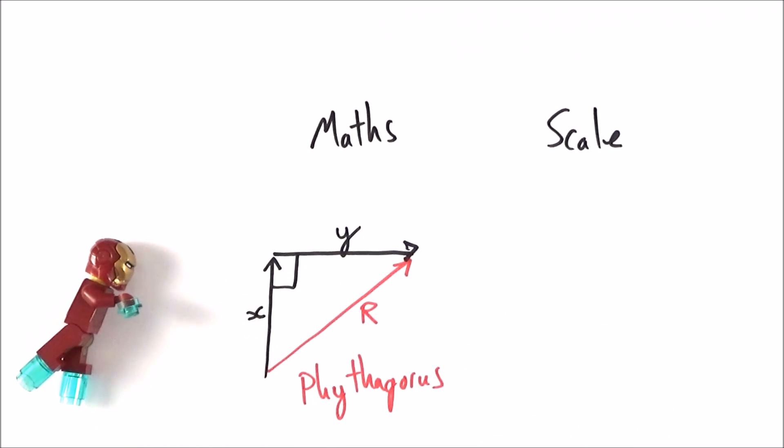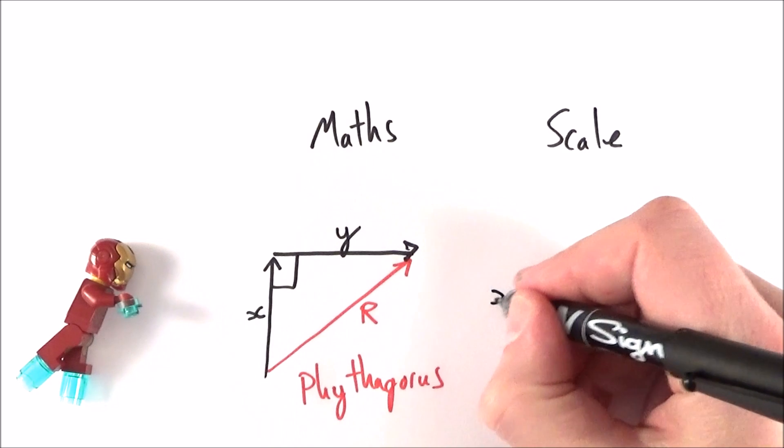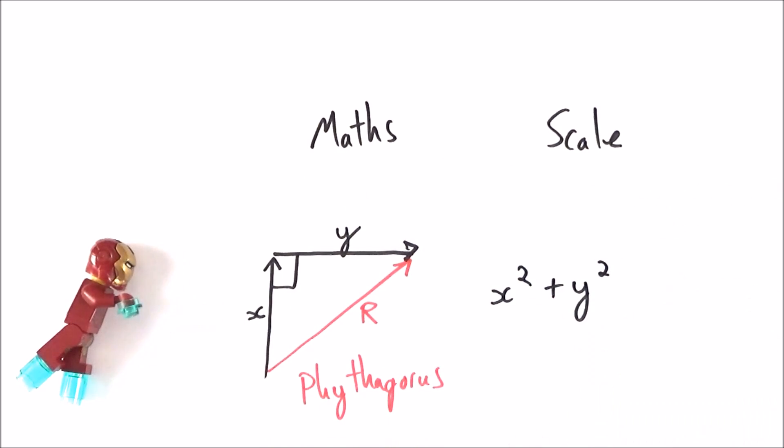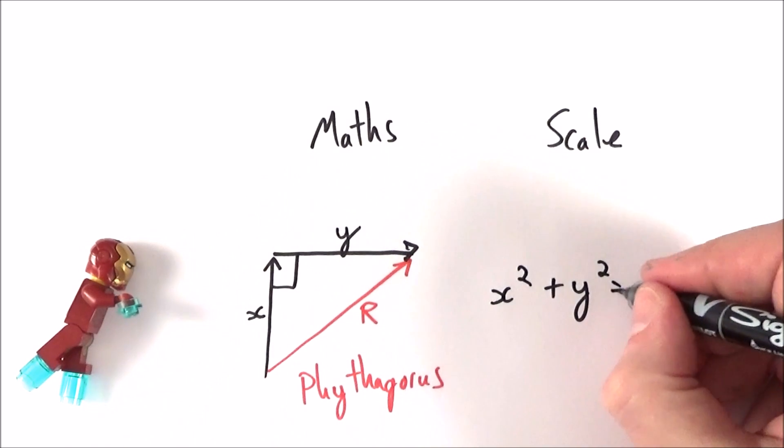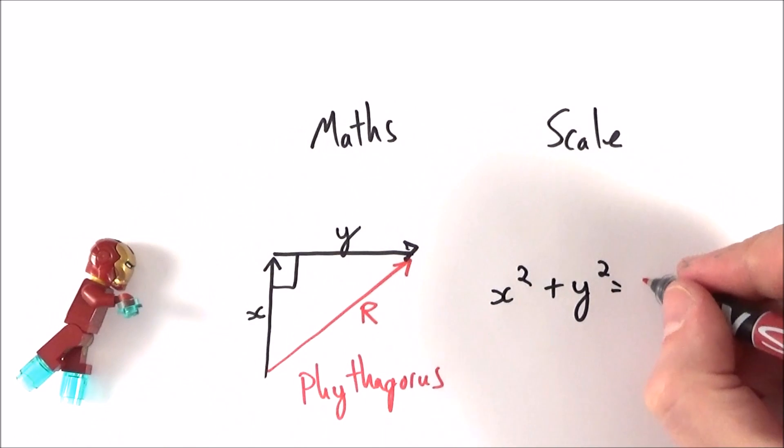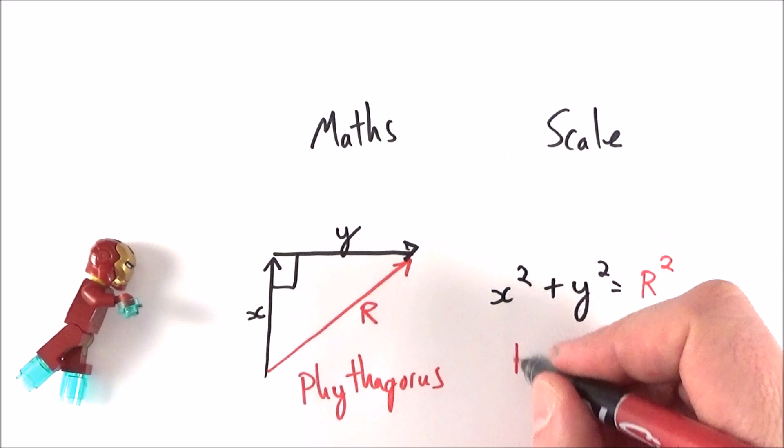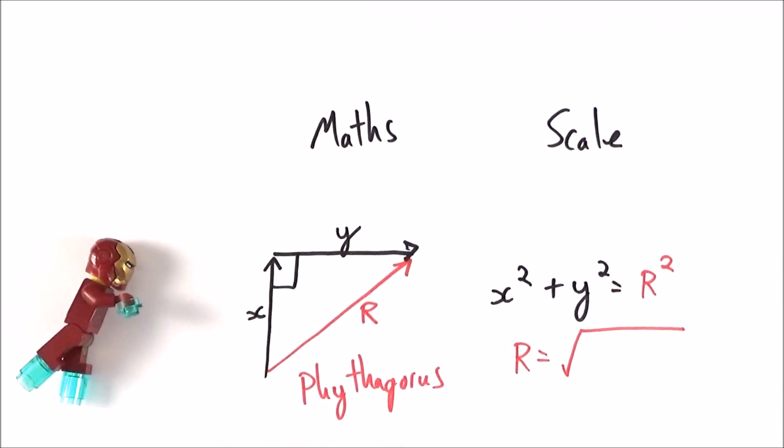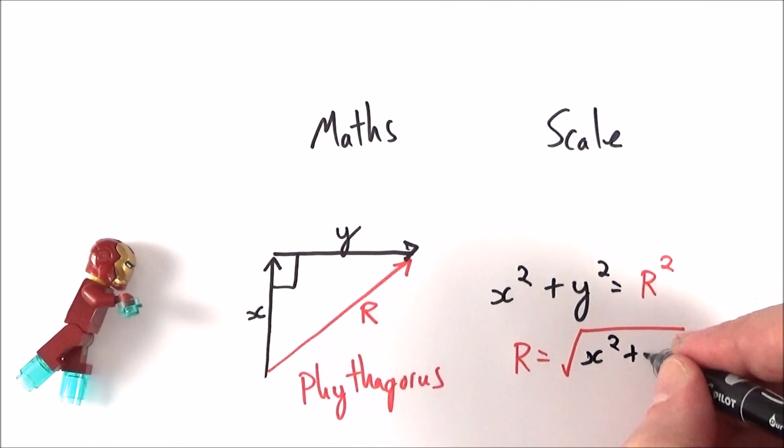So Pythagoras says that x squared plus y squared is going to be equal to r squared. So r is just going to be the square root of x squared plus y squared.